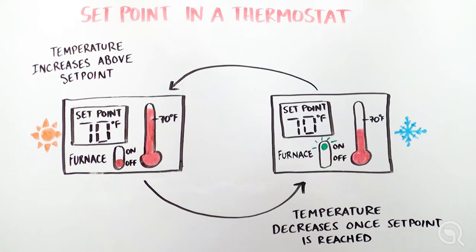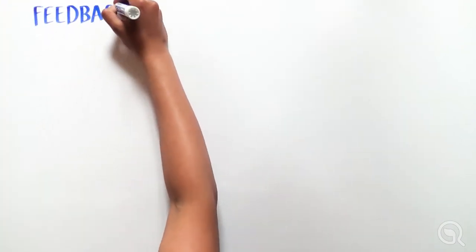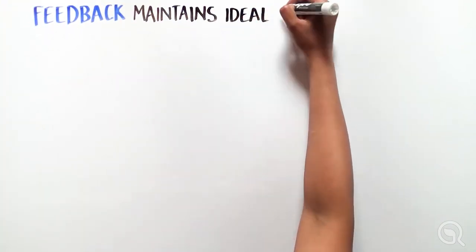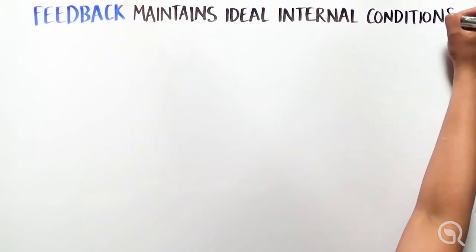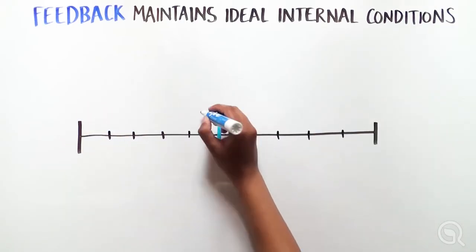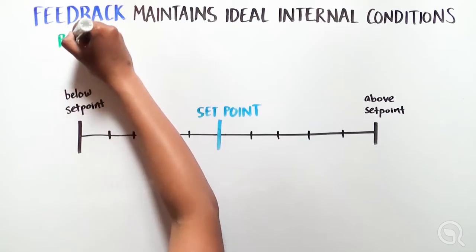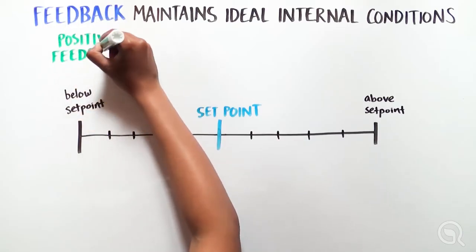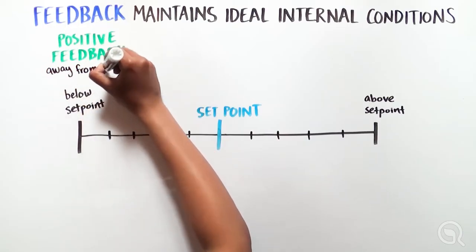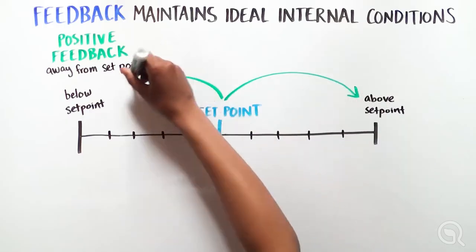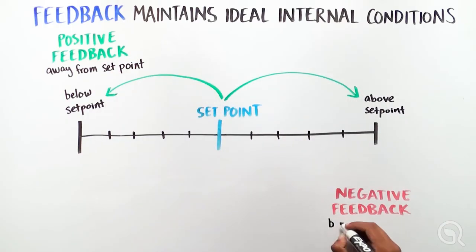But how does this process work in the body? Let's take a closer look. Our biological systems use processes known as feedback to help maintain ideal internal conditions. There are two main types, positive feedback and negative feedback. Positive feedback moves biological systems away from the set point, and negative feedback brings them back to it.